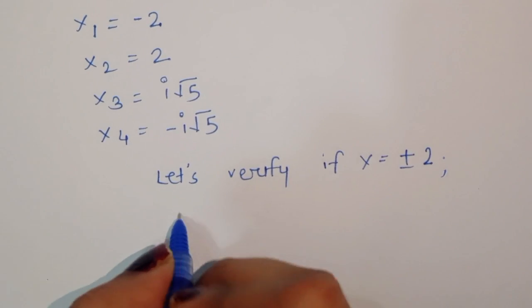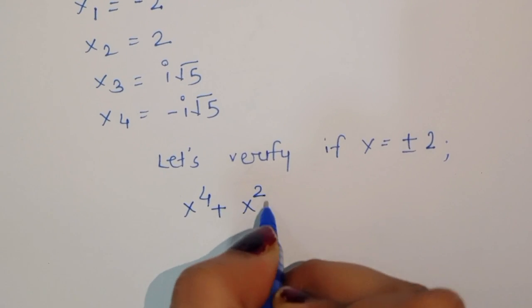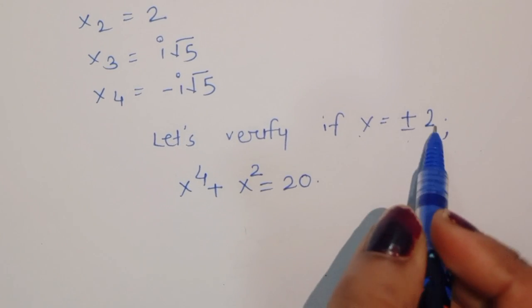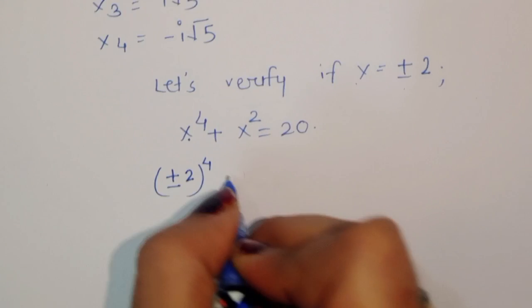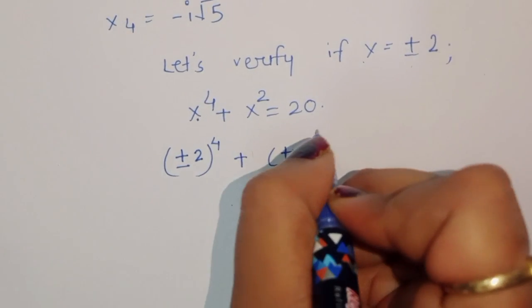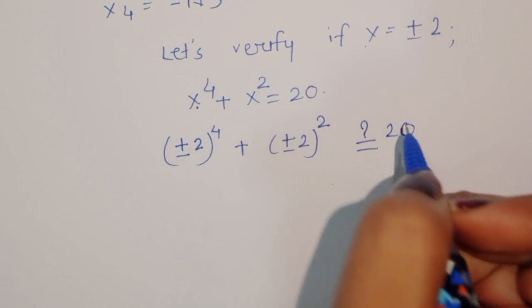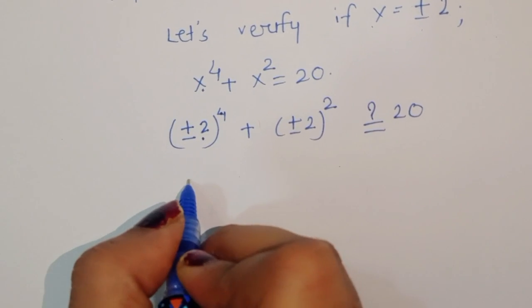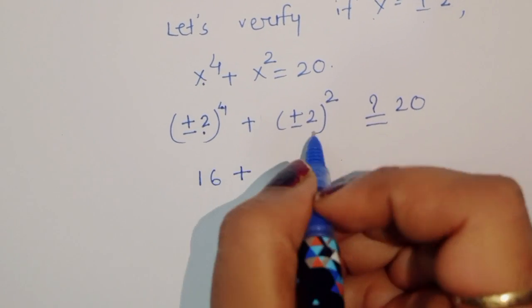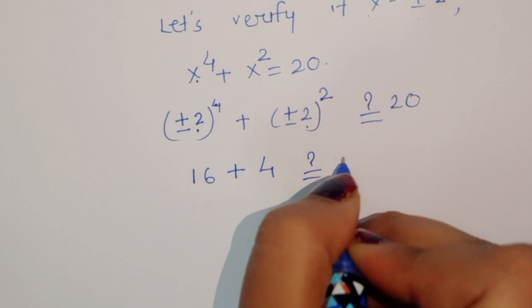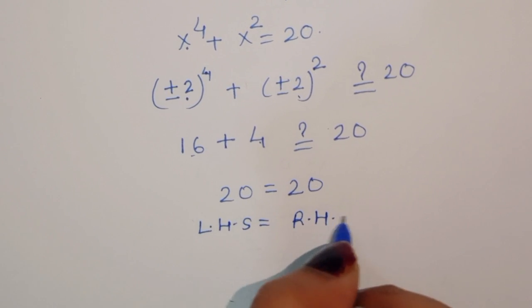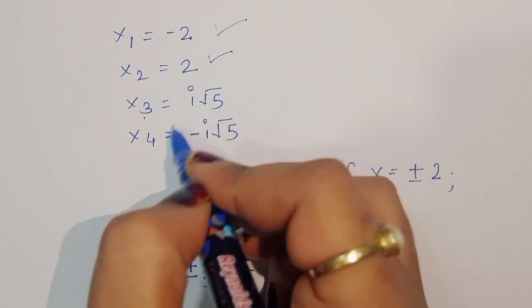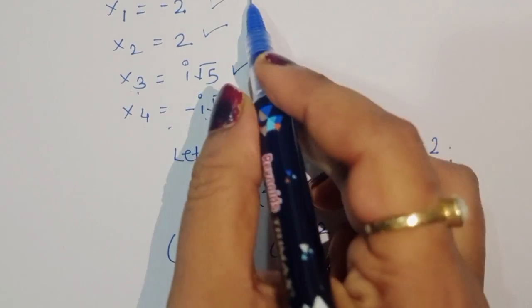Let's verify: for x = ±2, substituting into x⁴ + x² = (±2)⁴ + (±2)² = 16 + 4 = 20. LHS equals RHS, so x₁ = -2 and x₂ = 2 are correct. x₃ = i√5 and x₄ = -i√5 are the imaginary solutions.